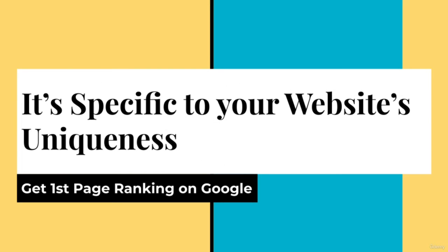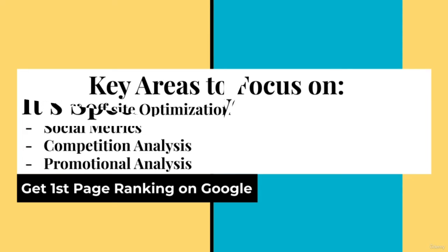That way, you're not just doing general tactics that everyone uses. You're actually doing the work that your website needs in order to rank higher, as every website is unique. A good SEO audit will look at several key areas of your website, including on-site optimization, off-site optimization, social metrics, a competition analysis, and even a promotional analysis. If these categories don't sound familiar to you just yet, don't worry. I'm going to cover each of these in detail so you will feel very comfortable with them all soon.